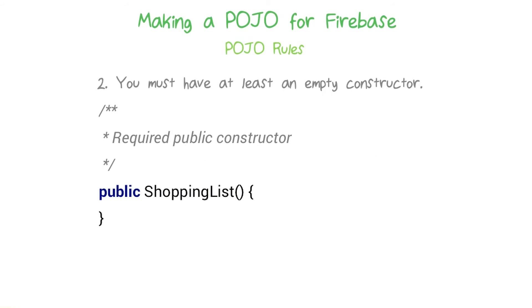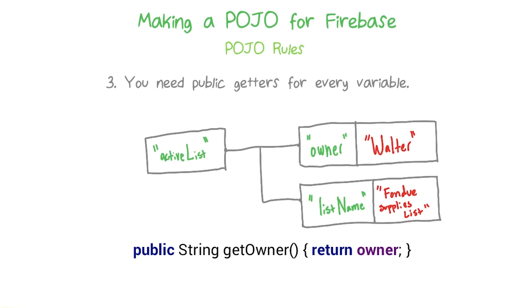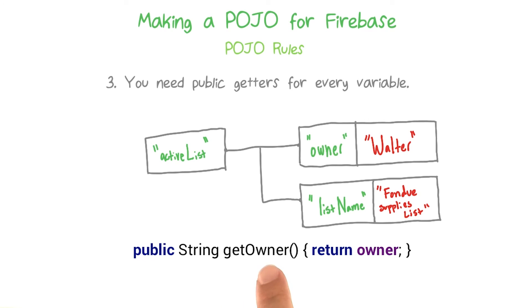Rule two: you must have at least an empty constructor in your POJO object. You can make other constructors and you don't need to use the empty constructor, but it does need to be there. And rule three is that you need a public getter method for every member variable. For example, here's a public getter method for owner — it should say 'get' and then the member variable's name in camelCase. So let's do this in the code.